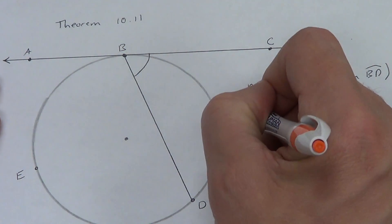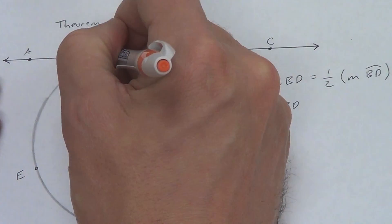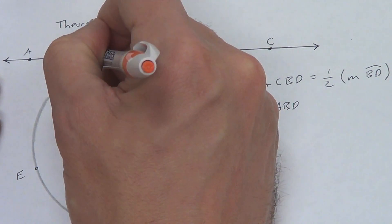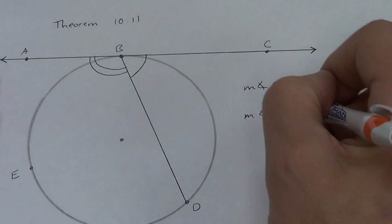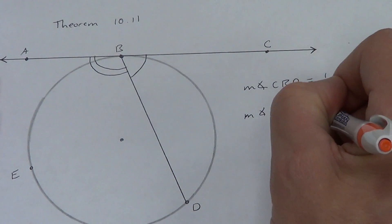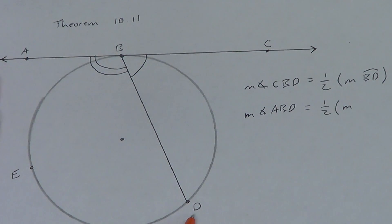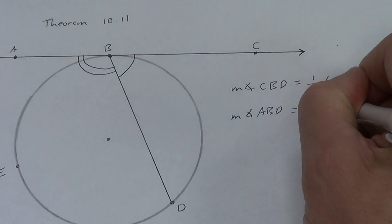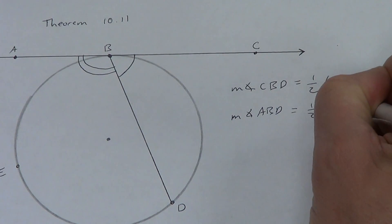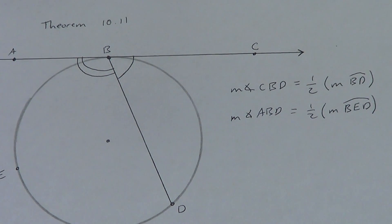So the measure of angle ABD — I'll put two marks on it to show it's different — equals one-half times the measure of arc BED. We use three letters to name a major arc. That's Theorem 10.11 — a very, very simple theorem.